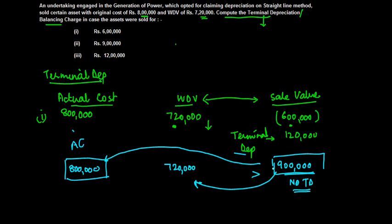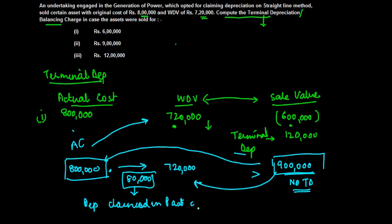But in this case what is happening is this 9 lakh is basically two things. Out of this 8 lakh, you have actually claimed a depreciation of 80,000. So whatever depreciation has been claimed in the past, depreciation claimed in past, or in other words the difference between the actual cost and the written down value.